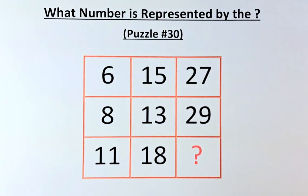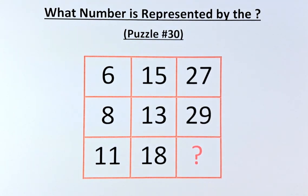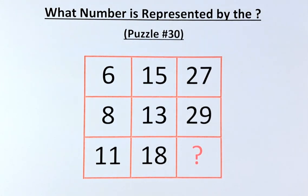Welcome back to the solution of puzzle number 30. What number is represented by the question mark? The numbers on the first row are 6, 15, and 27. Second row, 8, 13, and 29. And in the final row, it's 11, 18, and a question mark.